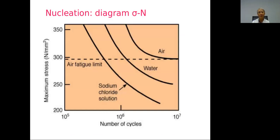Here is an example of the classical fatigue diagram. In air, you usually have a fatigue limit — you can apply a large number of loading cycles without crack initiation. But if you add a corrosive environment — even simply water — you remove the fatigue limit entirely. It is no longer possible to apply a very large number of cycles without getting a crack, and the situation gets worse with a more aggressive solution like sodium chloride.